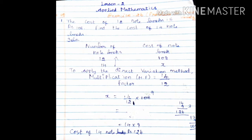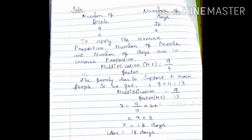Next: problems on inverse variation. First problem — a family of 9 people have enough food to last for 26 days. How many days will the food last if the family has to support 4 more people? Write the solution: number of people and number of days. So 9 people and 26 days. Find x for the new number of people. Number of people and number of days are in inverse proportion. Find the multiplication factor: MF equals 9 by the new number.